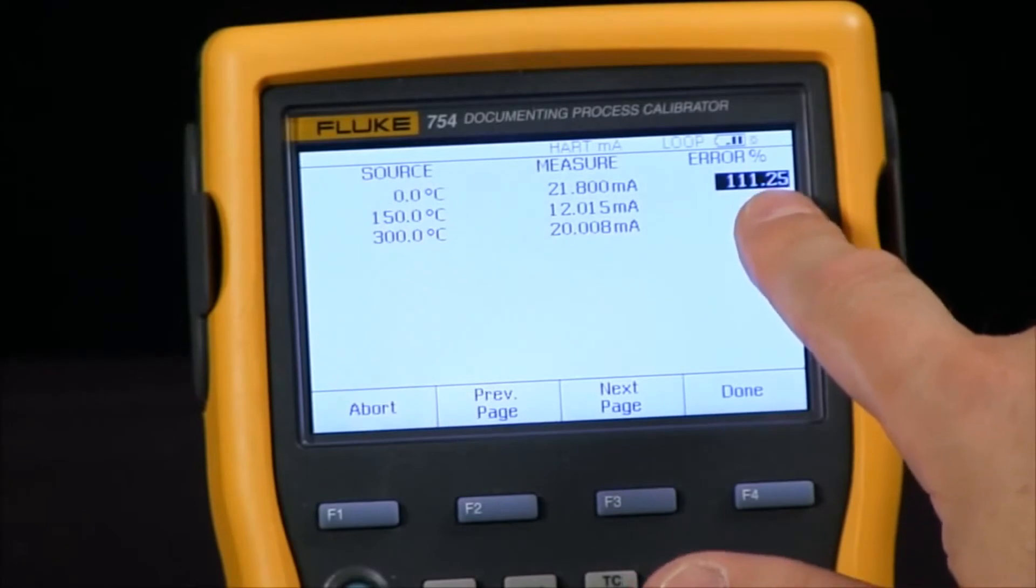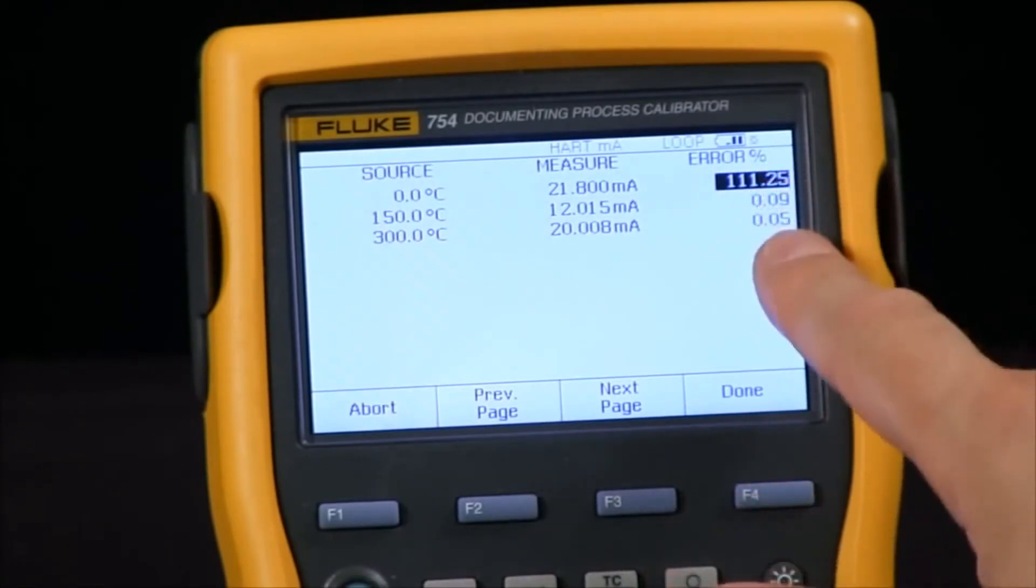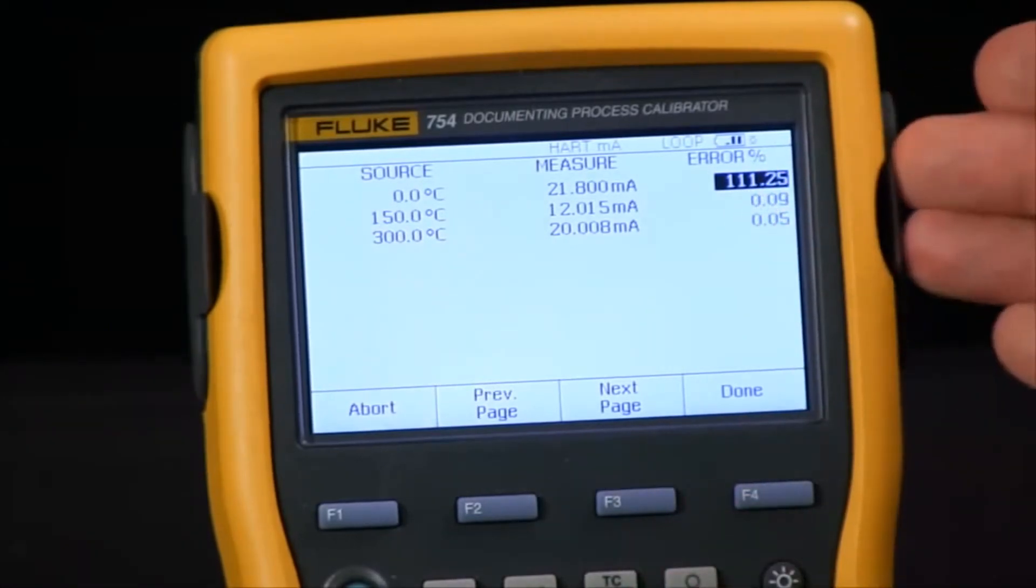So there I'm out of tolerance with a negative value on the first one and the last two are in tolerance so those are in positive value.